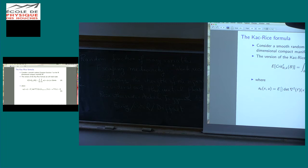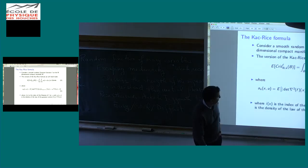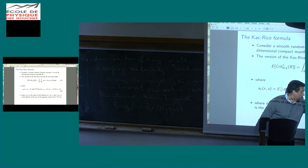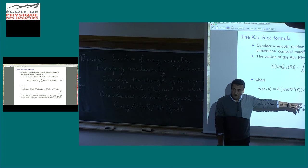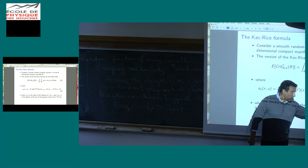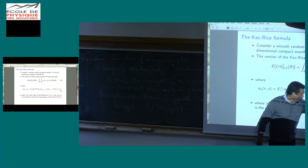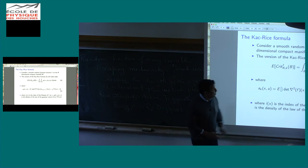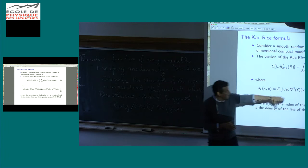If you want to understand the Katz-Rice formula, these are the two books you should read — I advise you to read the simpler one first, before the one that requires heavy differential geometry. So what is the Katz-Rice formula? Here it is: you have a random smooth Gaussian function on the manifold M, and you look at the expectation of the number of critical points of index K with values in B. This is given by a double integral — the integral over B and over the manifold — of the key quantity A_K(x, u).